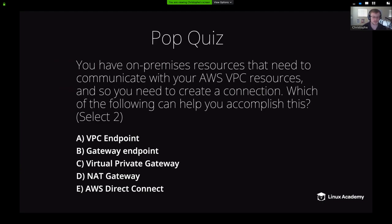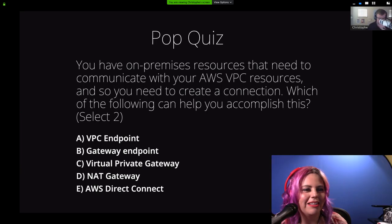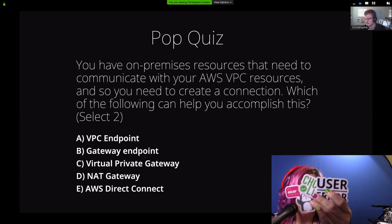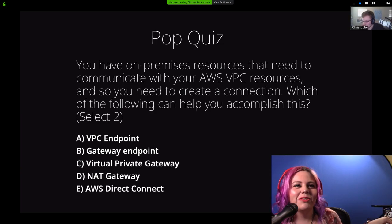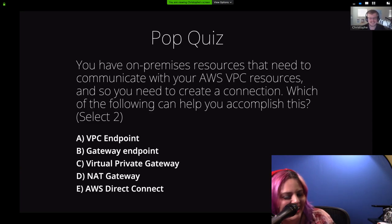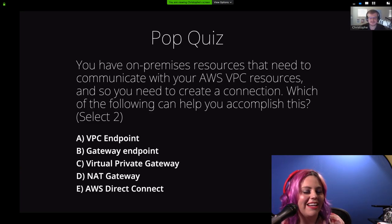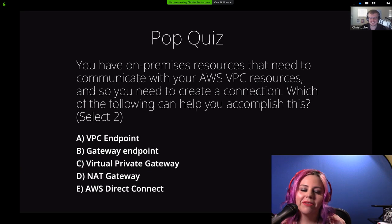Next pop quiz: You have on-premises resources that need to communicate with your AWS VPC resources. Which two of the following can help you accomplish this? Answers are coming in — it looks like A and D are popular choices.